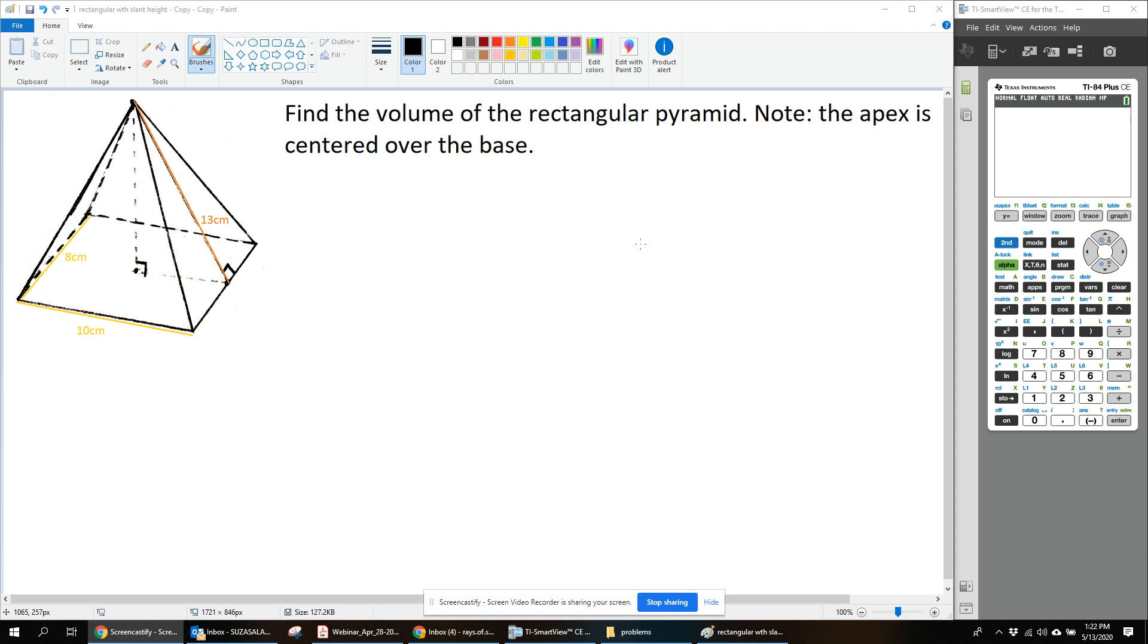Okay sunshines, we're going to find the volume of a rectangular pyramid. Since it's called a rectangular pyramid, that means the base is a rectangle.